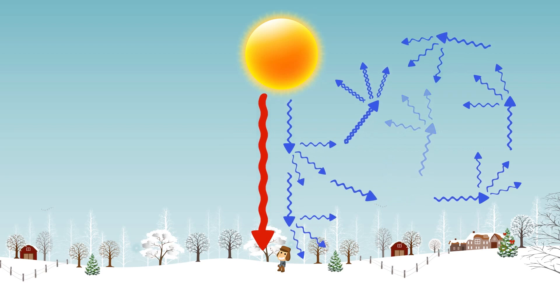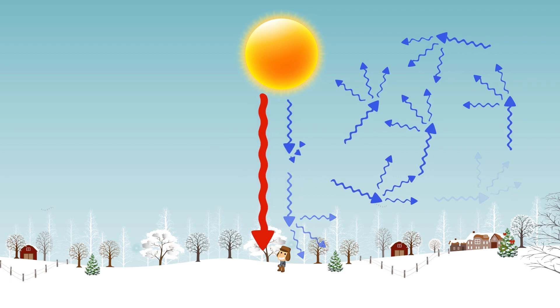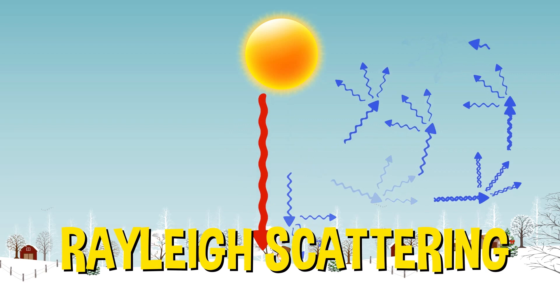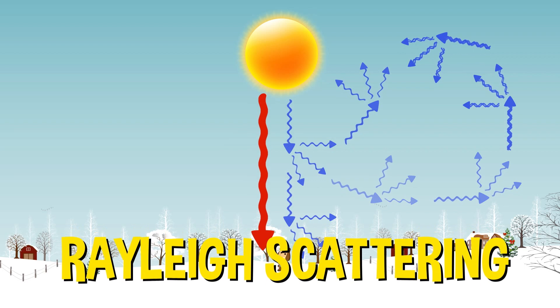Since blue light has shorter waves, the scattered light appears blue. That scattered blue light bounces all around in the air around us and enters our eyes, making the sky look blue. This effect is called Rayleigh scattering.